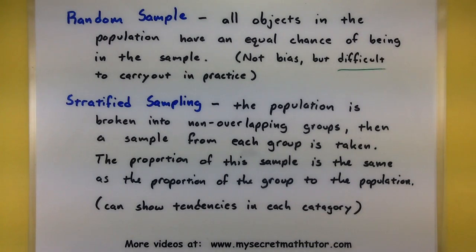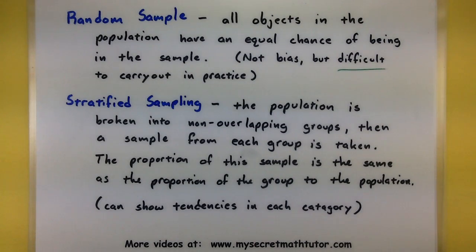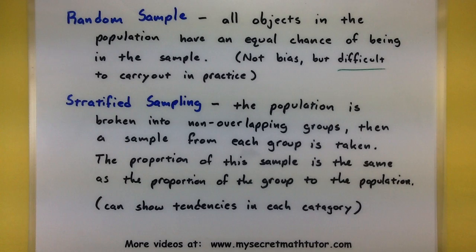Another type of sampling that we might do is stratified sampling. In this type of sampling, we start with the population and we start breaking it into non-overlapping groups. Now from each of those groups, we then go ahead and take a sample. The important part that makes this stratified sampling is we make sure that the portion of the sample is the same as the proportion of the group to the population. That's kind of difficult to wrap your mind around, but let's just take a simple example.